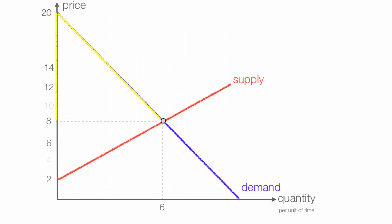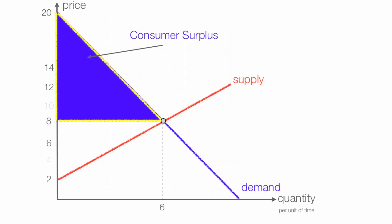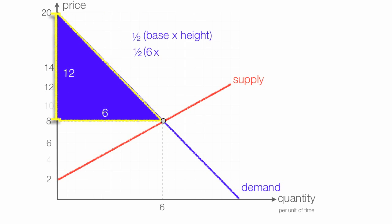Consumer surplus is the area above price and below the demand curve — that blue triangle. The area of that blue triangle is one-half times base times height. The base of the triangle is 6. The height of the triangle is 20 minus 8, or 12. So it's one-half times 6 times 12, which is one-half times 72, which equals 36. So consumer surplus is 36.